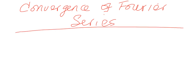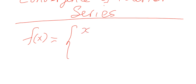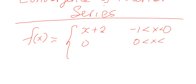In the last video I talked about the convergence of Fourier series, and I want to demonstrate how the Fourier series converges at the point of discontinuity. I will take an example of a function and then obtain the Fourier series. The function is f(x) = x + 2 in the interval from minus 1 to 0, and f(x) = 0 in the interval from 0 to 1, with period 2.